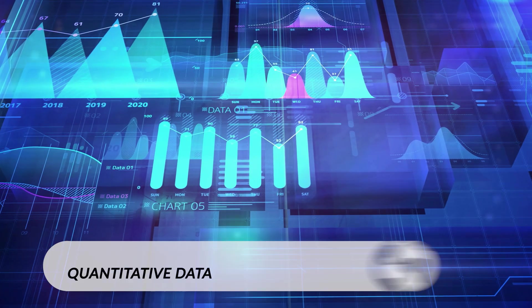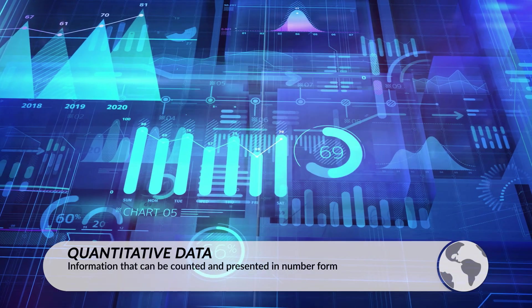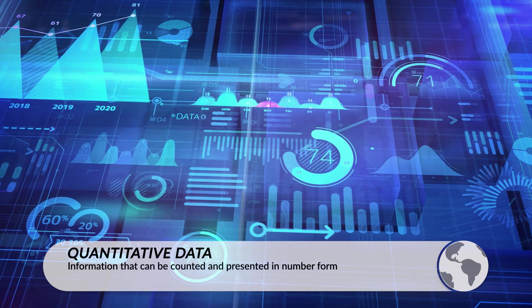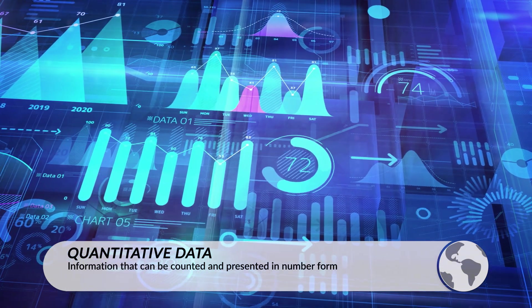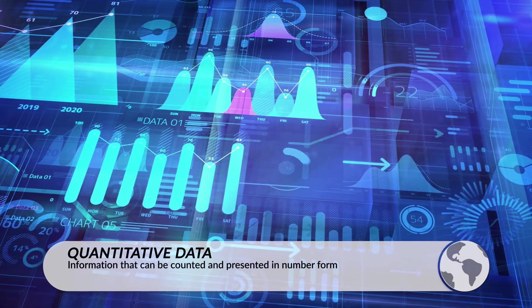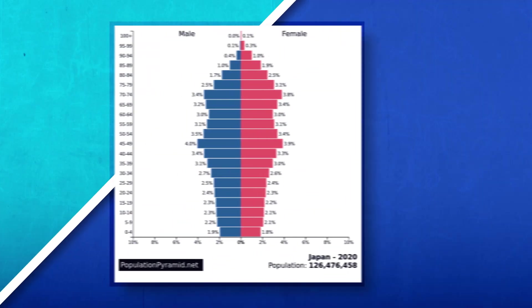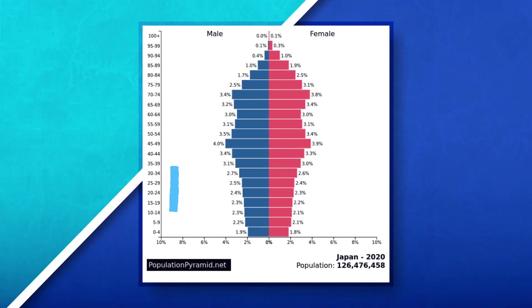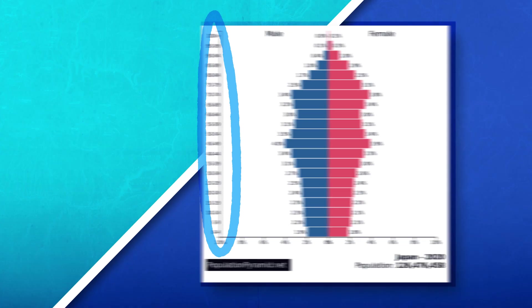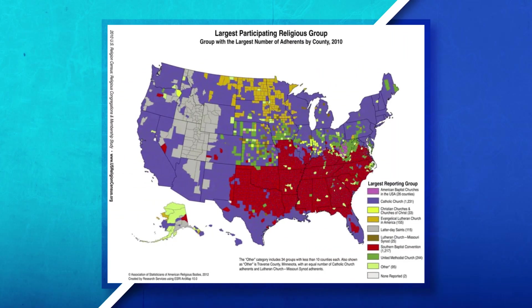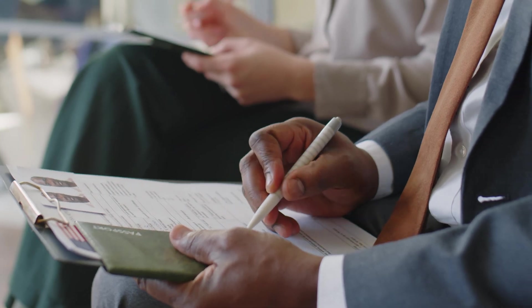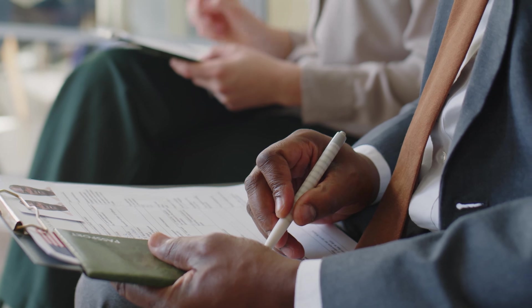On the other hand, quantitative data is used to better understand specific details about a place. This information is not up for debate and is often in number form. We can see examples of quantitative data, such as when we look at how many people are in each age cohort in Japan, or if we look at the religious breakdown of the United States of America. Most of the time, quantitative data comes from the census or survey data.